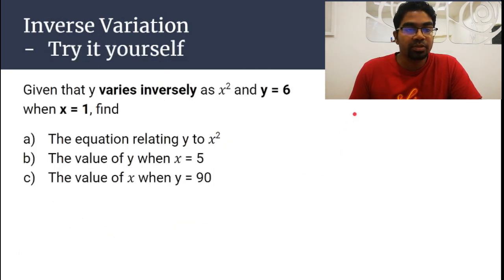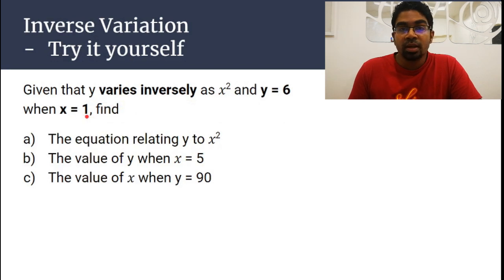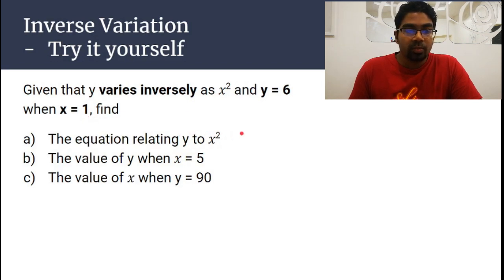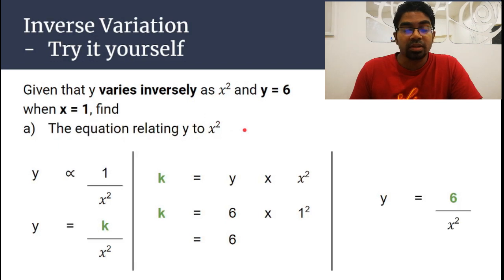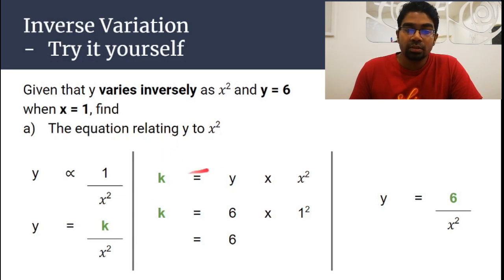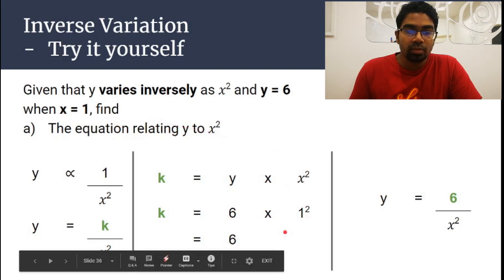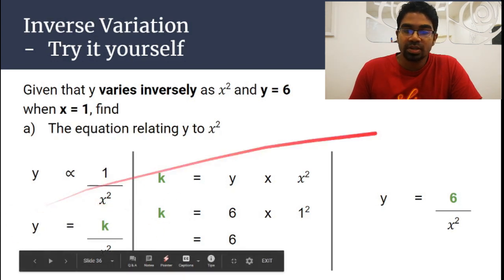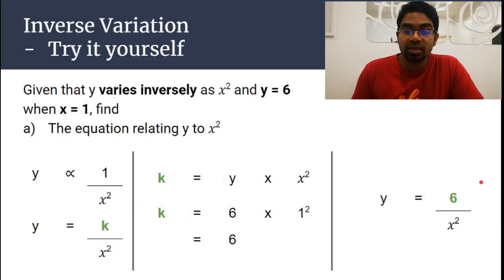Let's try this question. Given that y varies inversely as x squared, and y is 6 when x is 1. The first step is always to find the equation. Since y varies inversely as x squared, y is proportional to 1 over x squared, giving y equals k over x squared. Rearranging: k equals y times x squared. Substituting y = 6 and x = 1, k = 6. So y equals 6 over x squared.